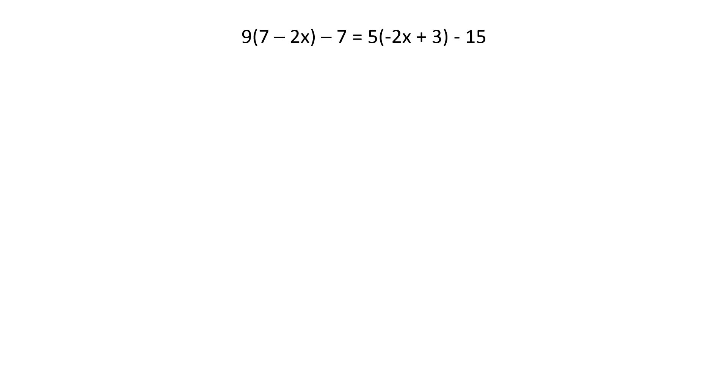This one's longer. Now, remember me saying you're going to have to learn to start writing things down because some of these are going to get long? Well, we're there. All right. So here's the thing. I have to look inside my parentheses. If I can't do anything, I have to look outside. And I have to distribute this 9 to everything inside of those parentheses. 9 times 7 is 63. 9 times negative 2x is negative 18x. Minus 7. I'm not touching. Equals. 5 times negative 2 is negative 10x. Multiply our numbers. 5 times positive 3 is positive 15 minus 15.